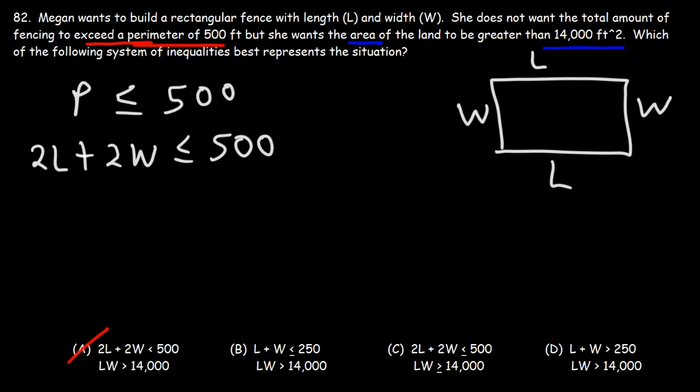And we could eliminate D. D has 250. So what we're going to do is divide everything by 2, not 250. So this becomes L plus W is less than or equal to 250. So we could eliminate D. B and C are both true. B is true if you divide by 2, C is true if you don't divide by 2.